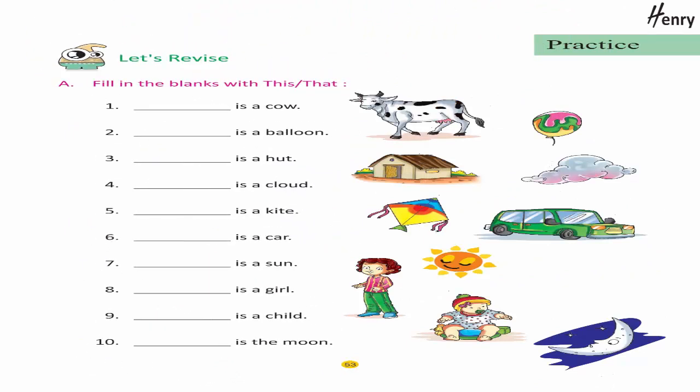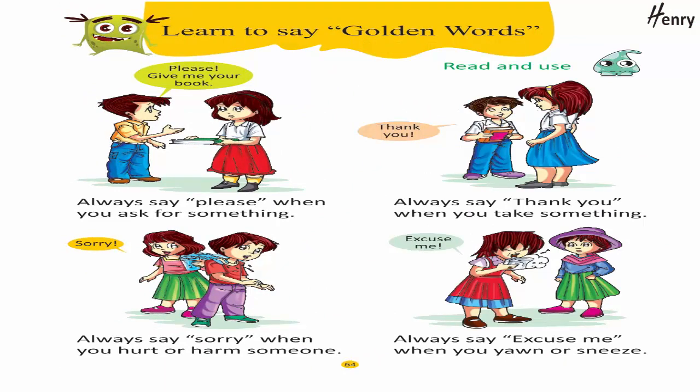Practice: let's revise — fill in the blanks with 'this' or 'that'. Learn to say golden words: Please — always say please when you ask for something. Thank you — always say thank you when you take something. Sorry — always say sorry when you hurt or harm someone. Excuse me — always say excuse me when you yawn or sneeze.